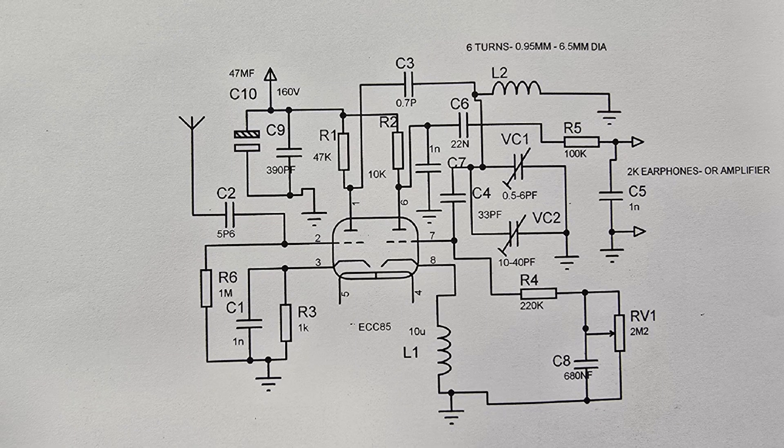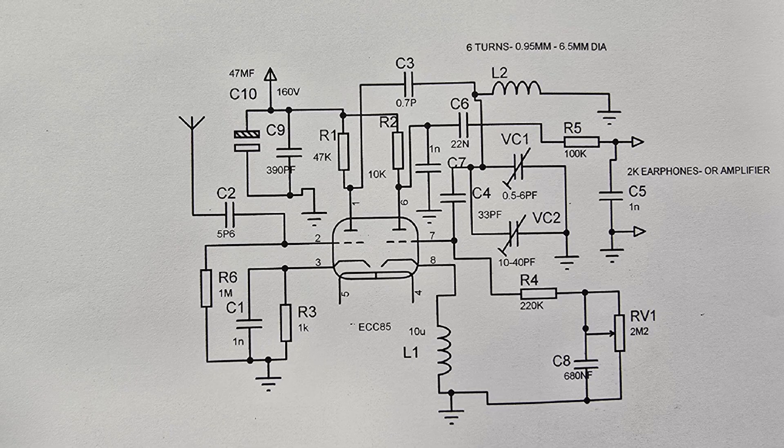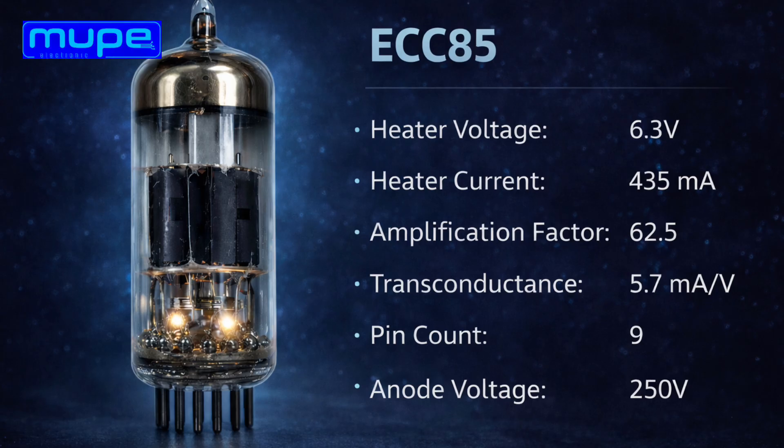Hello, in this video I will introduce a single tube FM regenerative radio receiver built using an ECC-85 dual triode vacuum tube.